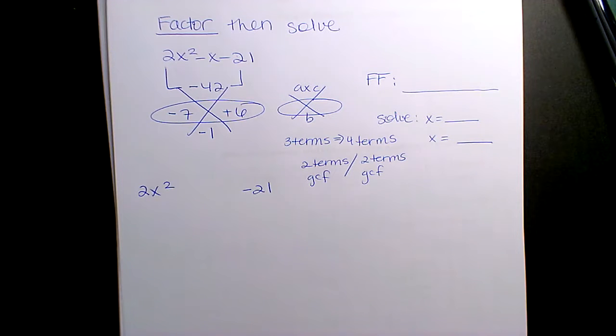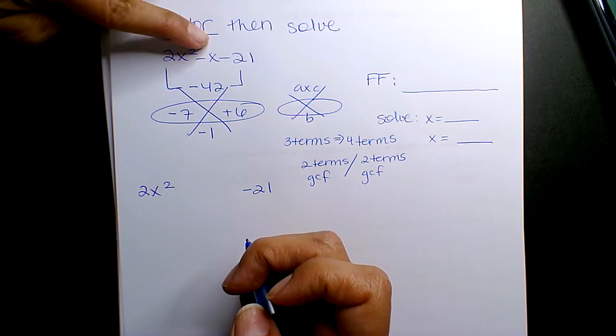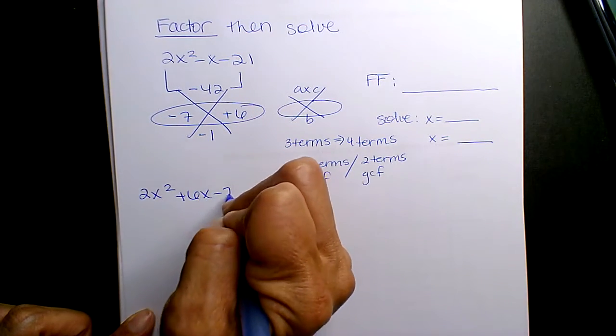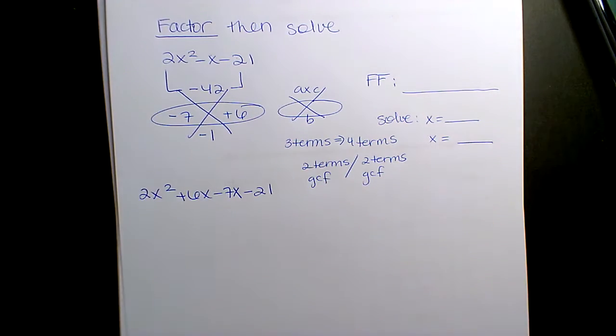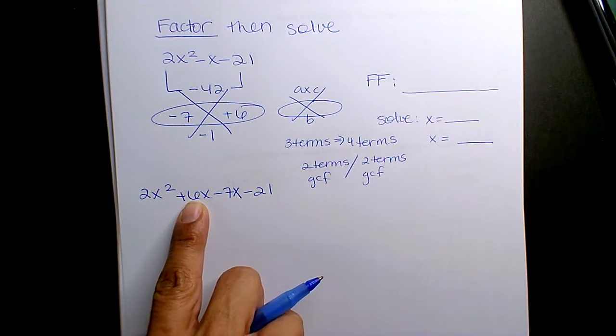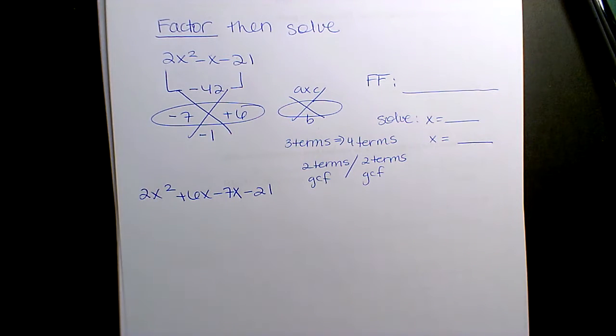You're replacing the B term with the two values that you got off the diamond method or magic X or whatever from the factory. Okay, so instead of this negative 1x, I'm replacing these two. Now it doesn't matter which one goes first, but I kind of know that 2 and 6, I can factor 2 out. It's 7 and 21, right, multiples. If you did the 7 and the 6 switch, then you'll still end up with the same answer.